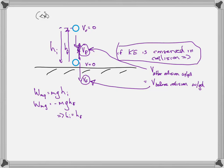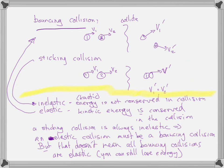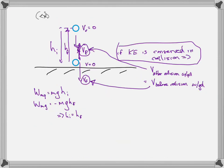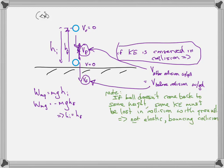So go grab a bouncy ball, drop it, and see — does it come back up to the same height from where you dropped it? The answer is no, it never does. Why not? Because kinetic energy is not conserved in the collision with the ground — the ball and the ground are not ideal springs, and some energy is lost. So it is a bouncing collision which is not ideal; it is partially elastic or partially inelastic — both mean the same thing — it's a bouncing collision where it loses some energy.